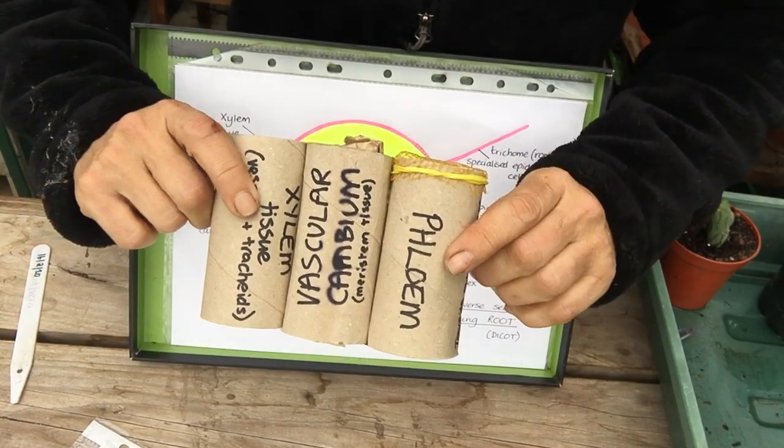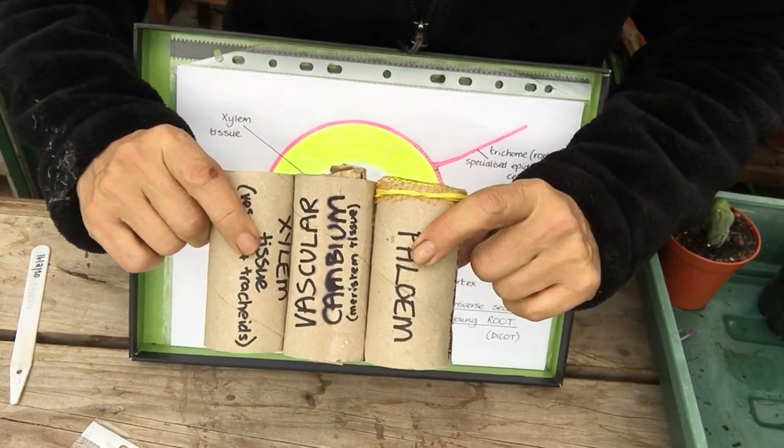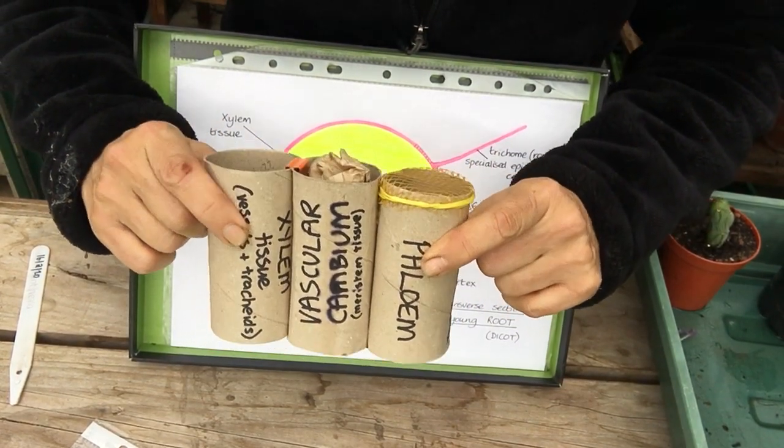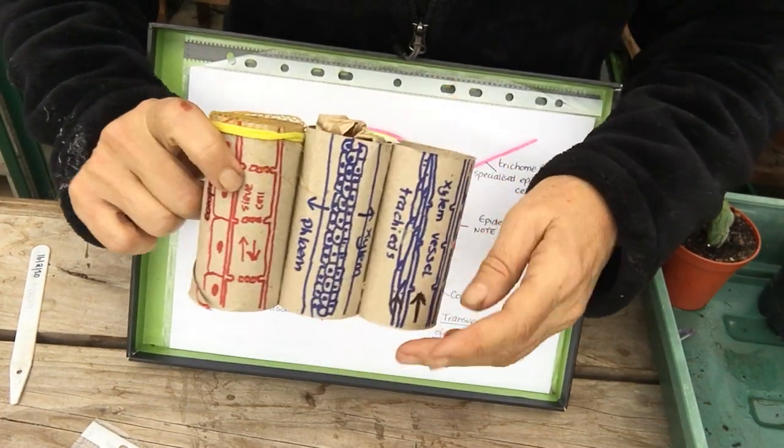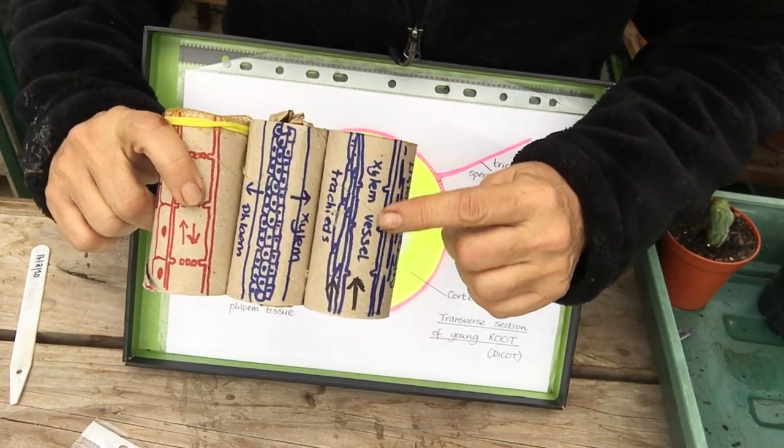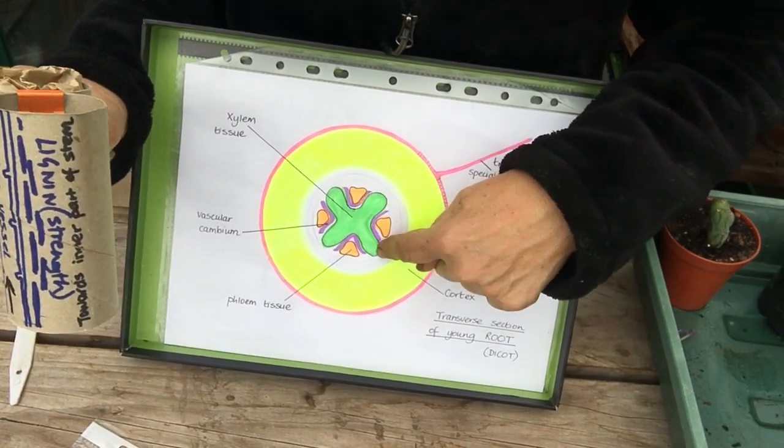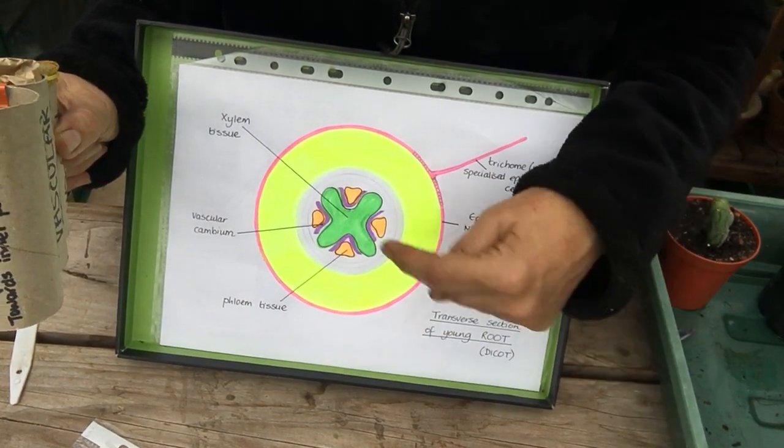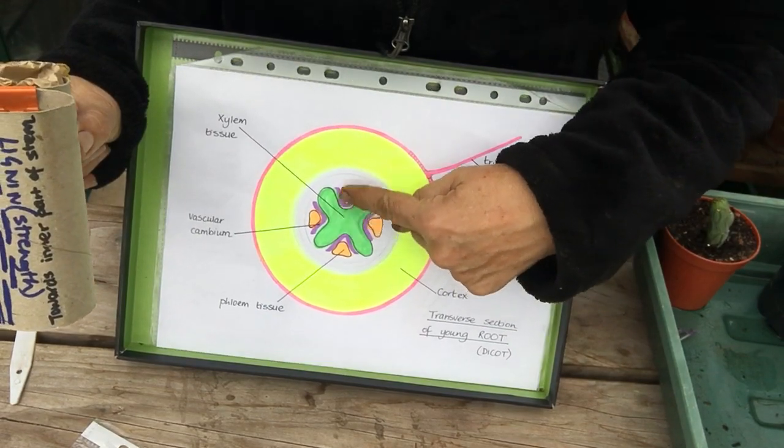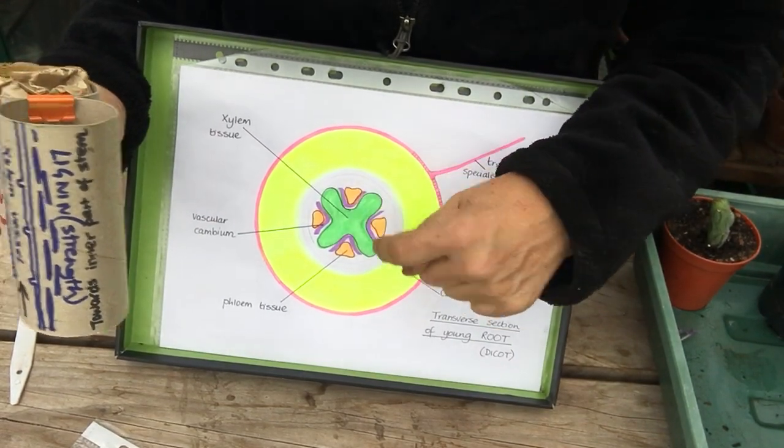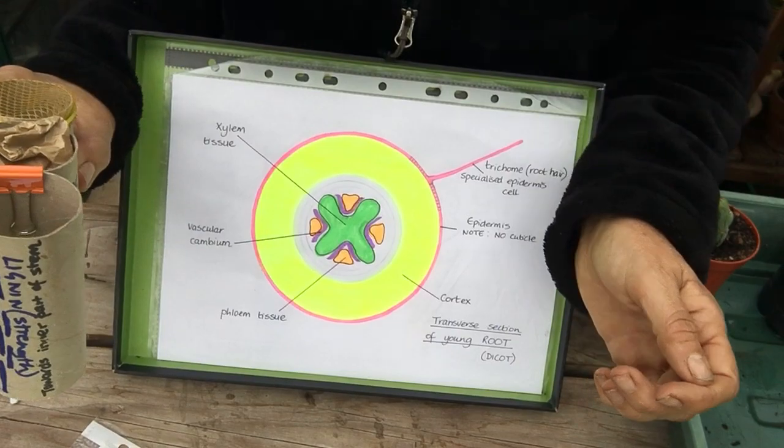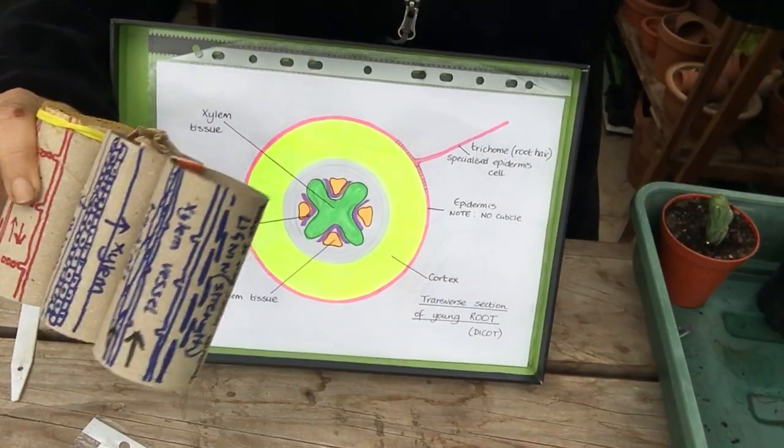So this represents our phloem and our xylem tissue. Let's first of all look at our xylem tissue which in the root is in the center and I like to draw it with four lobes so it's X for xylem. So in the root the xylem is in the center and it is the shape of an X if it's got four lobes.